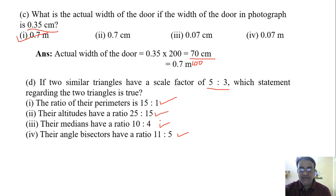So we have to check, for perimeter, for altitude, for median, the angle bisector, the ratio should be 5 is to 3. Which one has 5 is to 3 ratio? That you have to check. Second option. Yes. The correct answer is the second one.